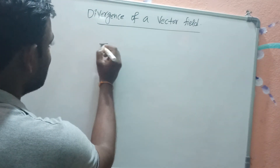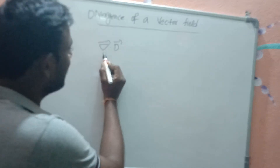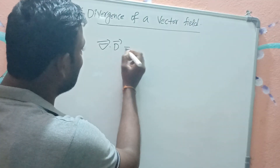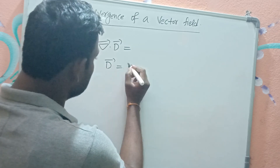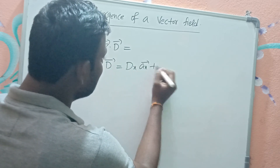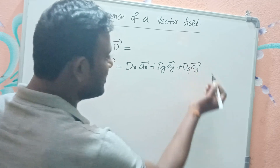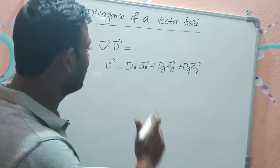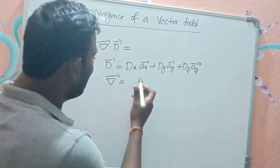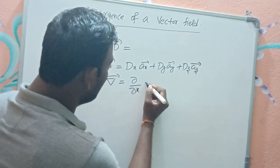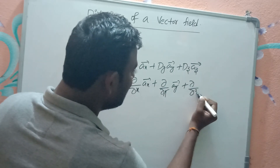The divergence of a vector field D-bar can be written as del-bar dot D-bar. In the Cartesian system, D-bar is represented as Dx·ax-bar plus Dy·ay-bar plus Dz·az-bar. The del operator in Cartesian system is ∂/∂x·ax-bar plus ∂/∂y·ay-bar plus ∂/∂z·az-bar.